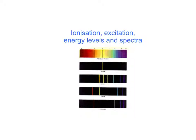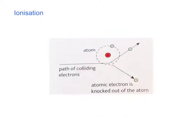Ionisation, excitation, energy levels and spectra. Ionisation is the process of producing ions, and ions are charged particles. There are a few ways that we can create charged particles, one being alpha, beta and gamma radiation.